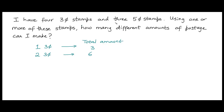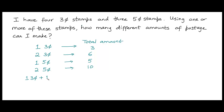I have also been given three five-cent stamps. If I used one five-cent stamp, the total amount I would be paying for postage would be five cents. If I used two of those, the total amount would be ten cents. I could also use a three-cent stamp in combination with a five-cent stamp — the postage amount in that case would be eight cents.